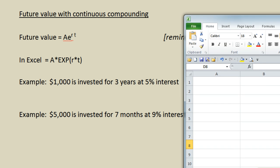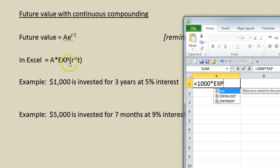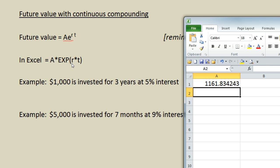And we got Excel right here. So we have equals A, the amount, one thousand times EXP for the e raised to the open parentheses. The rate is five percent. We do need to enter that as a decimal point oh five times time, which in this case is three. Close parentheses. Enter. It tells us that the future value will be one thousand one hundred sixty one dollars and eighty three cents.